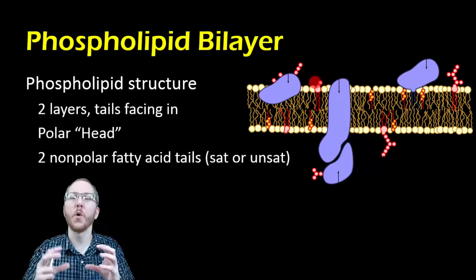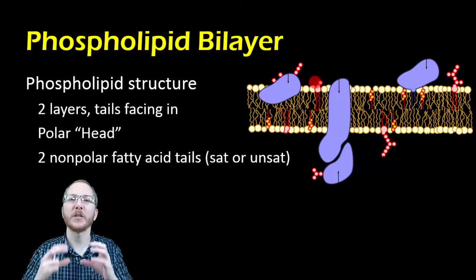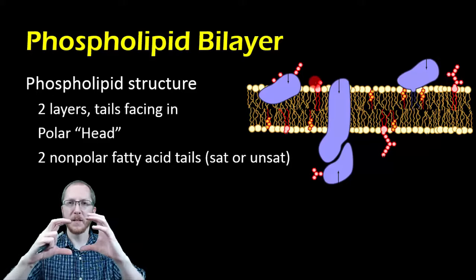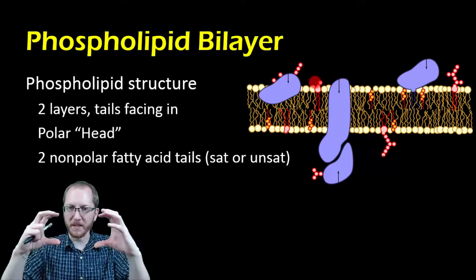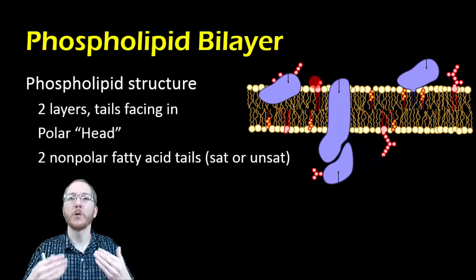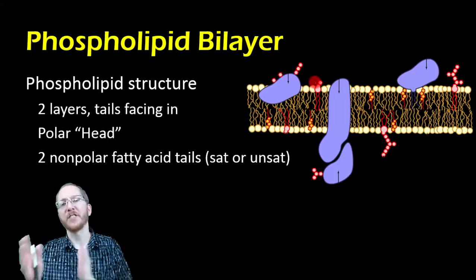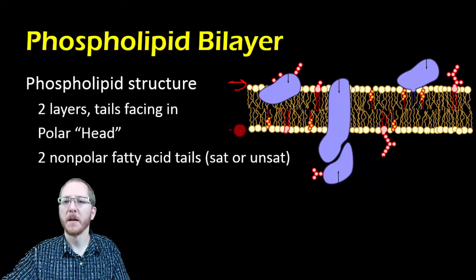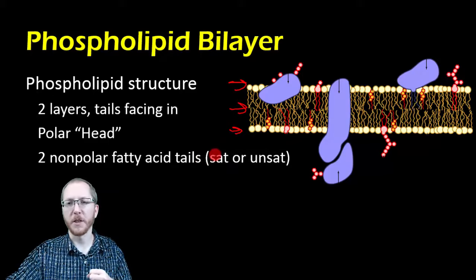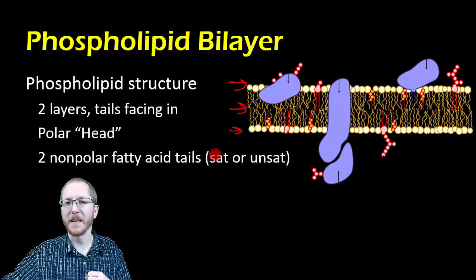Many organisms that live in cold areas have lots of unsaturated fatty acids, because cold tends to make things become more dense. By having unsaturated fatty acids, you spread things out, which counteracts that. So there are benefits based on where you live to having saturated versus unsaturated fatty acids. The polar head faces the water and the nonpolar middle is ultimately why charged things can't easily get through.